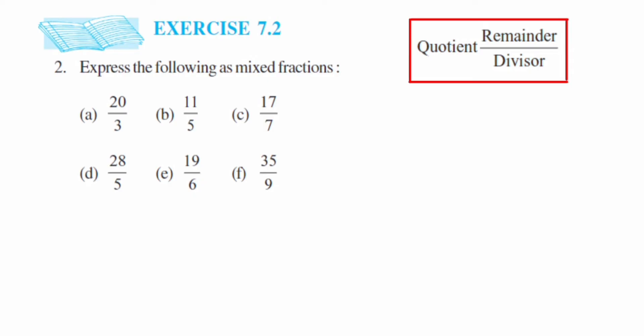When you want to convert this, we have to divide the number. Let's start with the first one. We have 20 upon 3, so don't cancel the number, divide it. When you're dividing, the number written in the denominator will be your divisor, so the divisor will be outside and the dividend is written inside, which is the numerator.